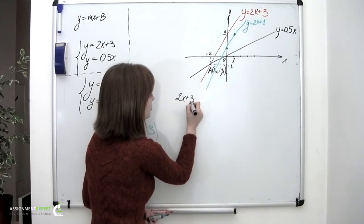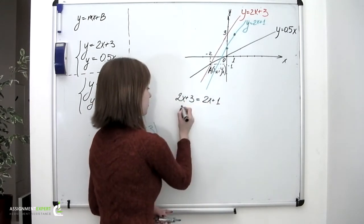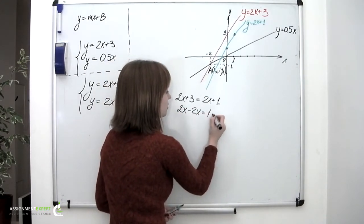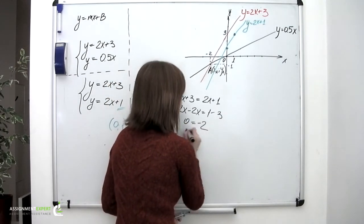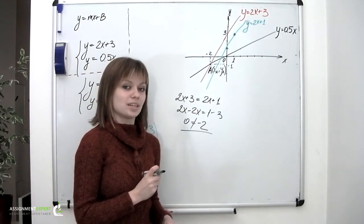2x plus 3 equals 2x plus 1. 2x minus 2x equals 1 minus 3. 0 equals negative 2, which is false. And this can only mean one thing.